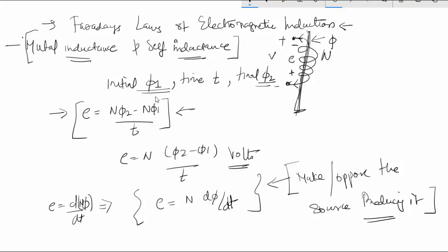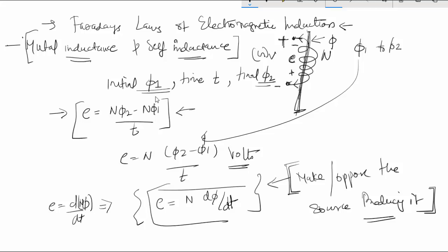Whenever the flux linkage is changing — for example, if I am supplying an AC current, or varying a DC voltage so that the flux changes from phi 1 to phi 2 — an EMF gets induced. This EMF can be given by the equation of Faraday's law of electromagnetic induction, and its direction will always be opposite to the cause producing it.